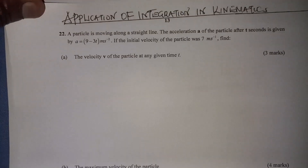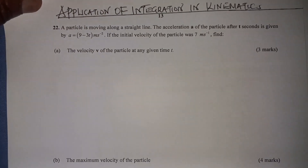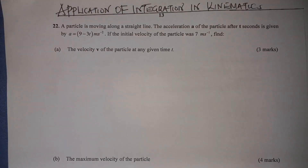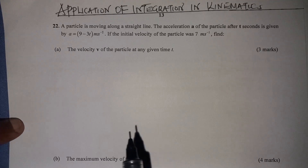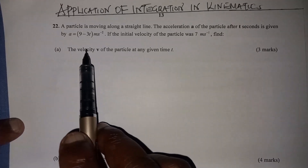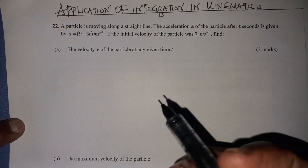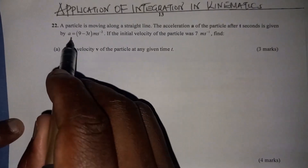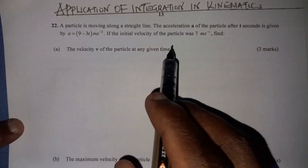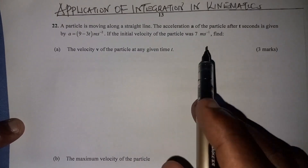So those are the questions. Let's go to the first part. You're supposed to find the velocity of the particle. You're given acceleration and you're given the initial velocity.